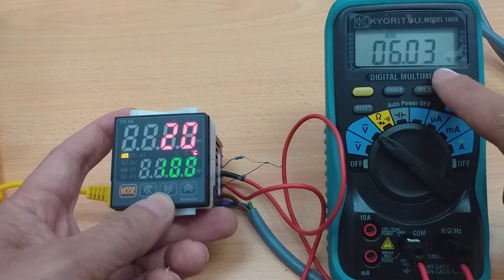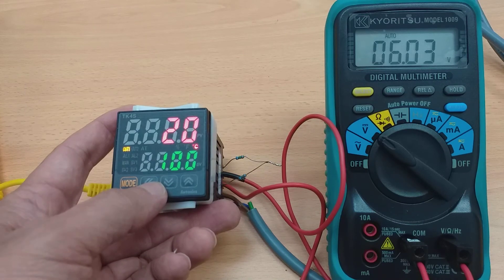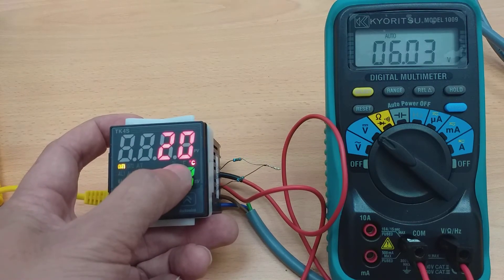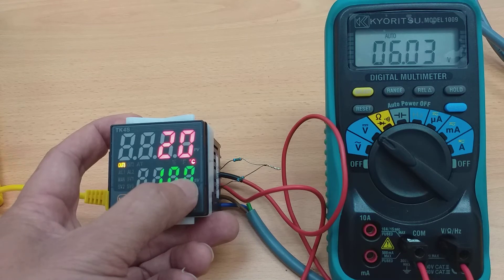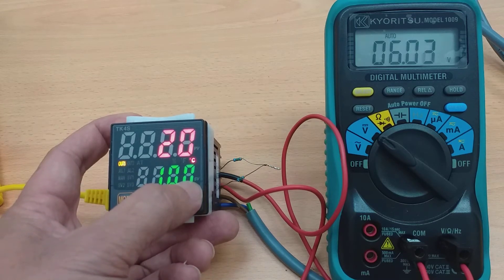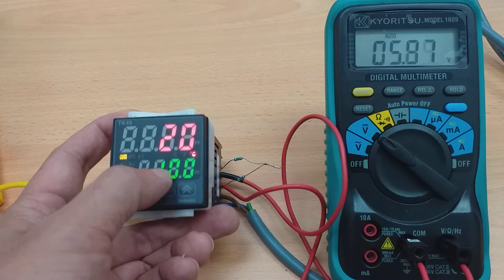You get 6 volt. My temperature is 20°C. So maximum set value or high set value is 100, maximum.